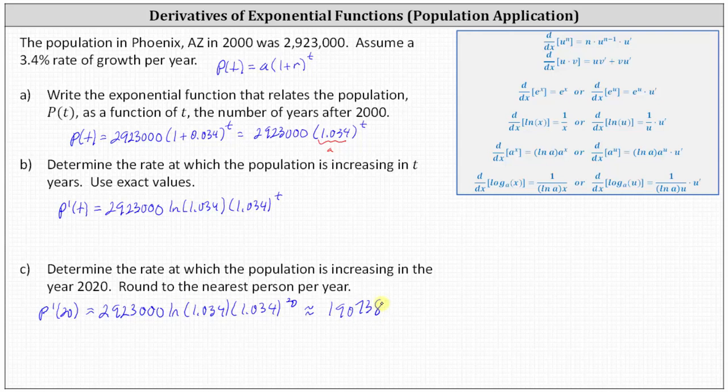Again, this is the rate at which the population is increasing in the year 2020, and therefore the rate with units is 190,738 people per year. I hope you found this helpful.